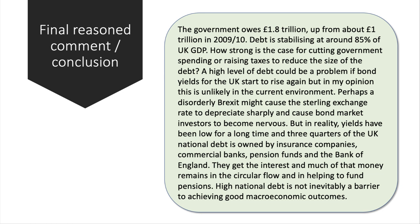Then you need to come to a final reasoned conclusion — your exam board will give you advice on how long this needs to be. The UK government owes £1.8 trillion, up by nearly 100% since 2009, with the debt stabilizing at around 85–86% of GDP. So how strong is the case for cutting spending or increasing taxes — or both — to reduce the size of the debt? A high level of debt could be a problem if bond yields for the UK start to rise again, but in my opinion this is unlikely in the current environment — perhaps if there's a disorderly Brexit that might cause the exchange rate to fall and bond yields to rise, but in reality yields on debt have been low for a long time.